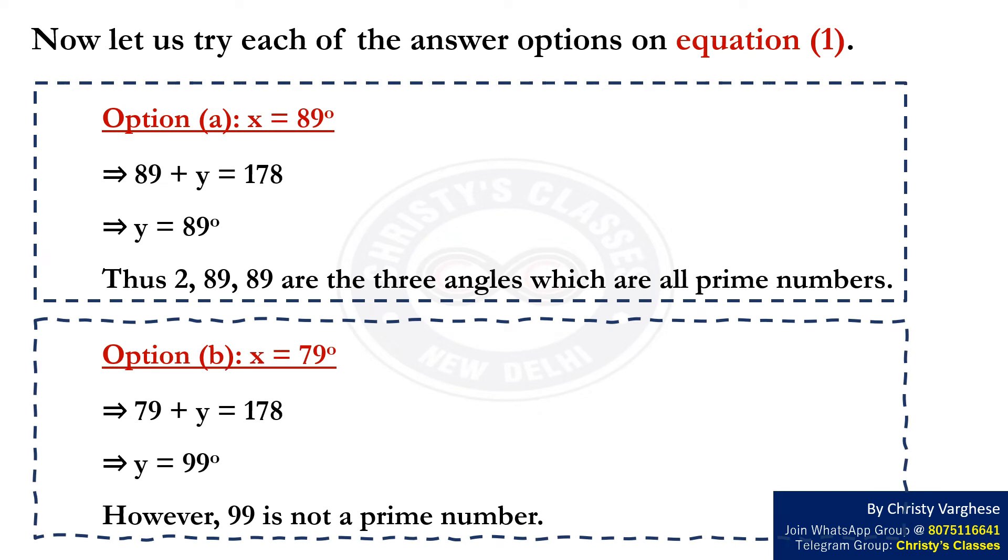Now let us consider option B: X equals 79 degrees. This implies 79 plus Y equals 178, which implies Y equals 99 degrees. However, 99 is not a prime number.